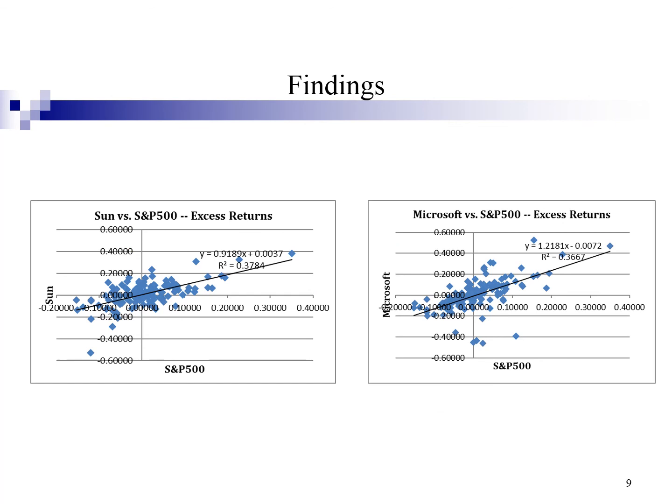The finding shows that Microsoft has higher beta of 1.2181. This means Microsoft is more responsive or sensitive to overall market fluctuation as compared to the Sun. When the market changes by 1%, Microsoft return will change by 1.2181%.